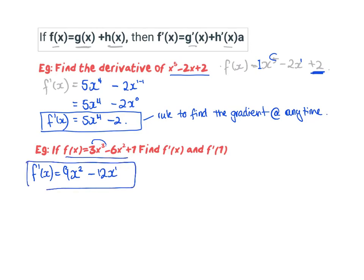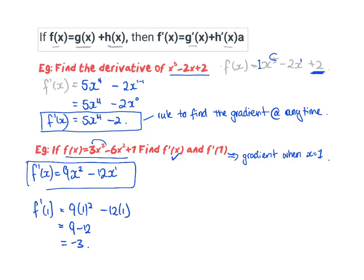They've asked me to find f'(x) — I've done that. Now they want me to find the gradient when x equals 1. So f'(1) equals 9 times 1 squared minus 12 times 1, which gives 9 minus 12 equals negative 3. So at the point when x is 1 on the graph — say the graph is a cubic — at x equals 1, we know it's a negative gradient. The gradient at that point is negative 3.